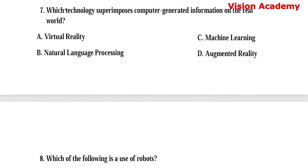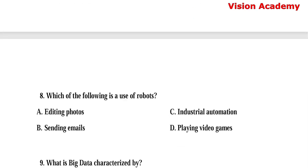Question number 7. Which technology superimposes computer generated information on the real world? Option A: Virtual reality. Option B: Natural language processing. Option C: Machine learning. Option D: Augmented reality. Here, option D, augmented reality, is the right answer.